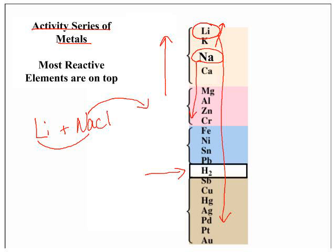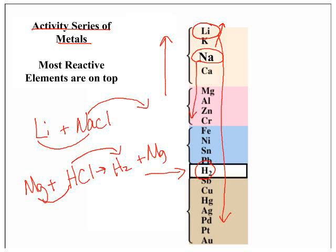You notice that hydrogen is placed here. Any metal above hydrogen can replace hydrogen from an acid. So magnesium and hydrochloric acid will undergo single replacement. Magnesium being above hydrogen will push the hydrogen out, forming H2 and then bonding to form the new compound.